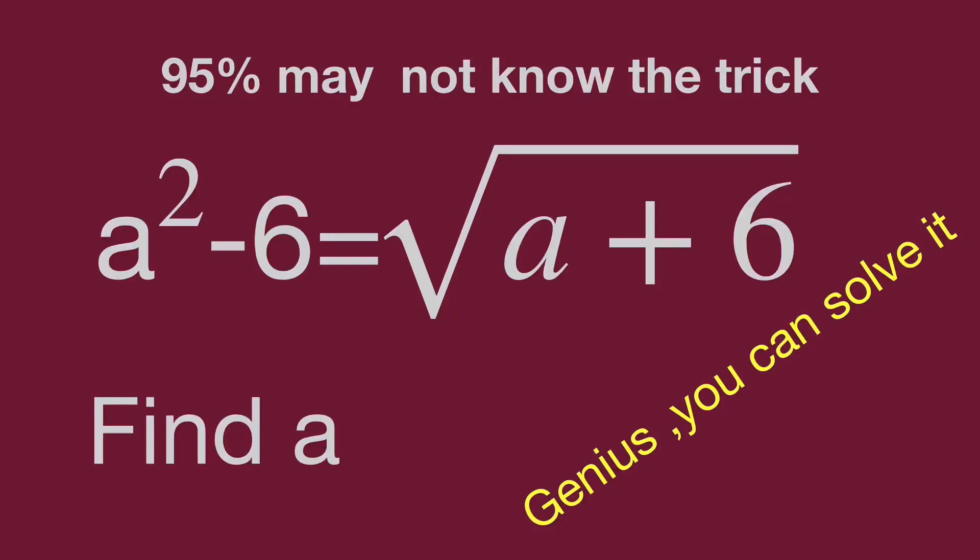Hello, you are watching Balhibo Math Genius Riddles. We have an equation: a squared minus 6 equals the square root of a plus 6. Find the value of a. It looks simple — we may get the answer at first look. But in this video, we share a nice math trick to get the answer easily. Pause the video and try it, then keep watching to get the result.